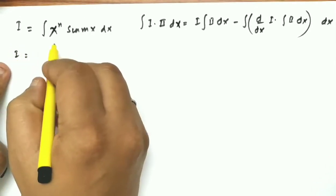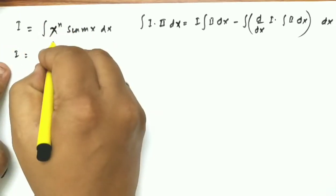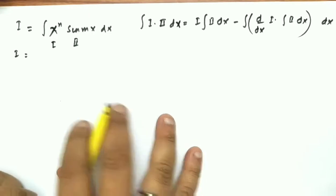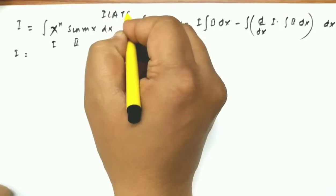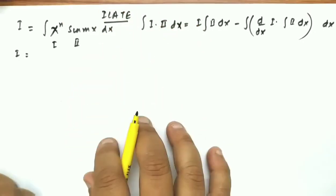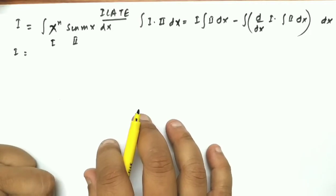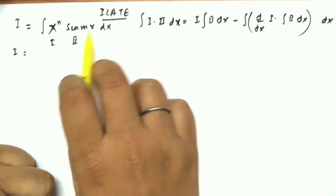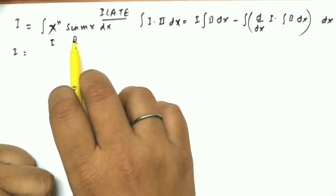Which one should be the first function? By using the ILATE rule — I for inverse trigonometric function, L for logarithmic, A for algebraic, T for trigonometric, and E for exponential — according to this rule, we will choose which one is the first function and which one is the second function.